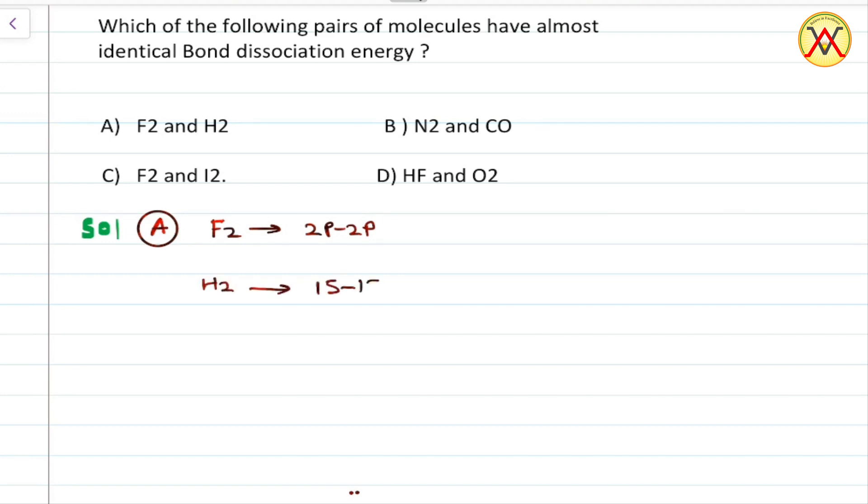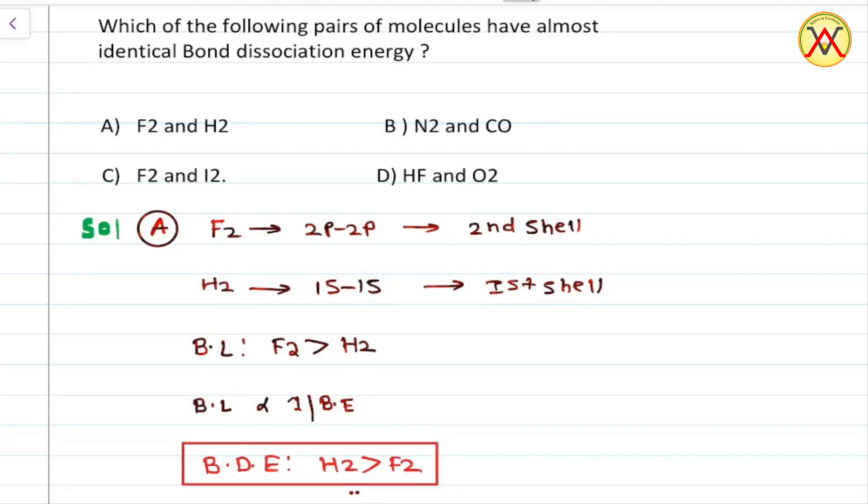has 1s-1s overlapping. As fluorine belongs to second shell and hydrogen belongs to first shell, the bond length order would be fluorine greater than hydrogen. We also know that bond length is inversely proportional to bond energy, so bond dissociation enthalpy